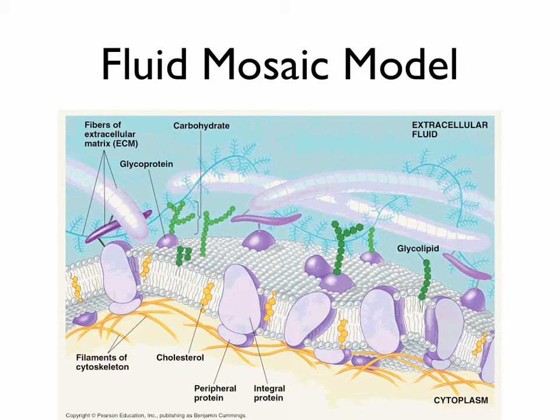We're going to start out by taking a quick look at what the cell membrane looks like. We call the idea used to describe this the fluid mosaic model, because basically it tells us that the cell membrane is a fluid of phospholipids, and embedded in that fluid skin are chunks of all kinds of things — proteins, cholesterols, carbohydrates — all sorts of things that help the cell make sure the good stuff comes in and the bad stuff stays out.